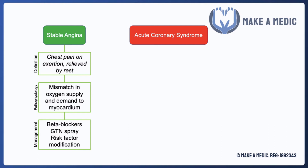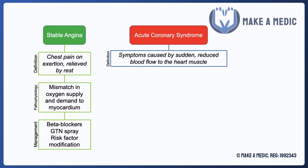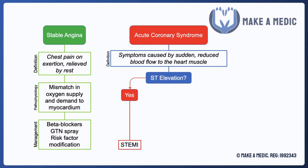Acute Coronary Syndrome is defined as the symptoms that occur due to sudden reduced blood flow to the heart muscle. There are three different subsets that constitute Acute Coronary Syndrome, differentiated based on their ECG findings and a blood test result. The first thing you do in a patient presenting with chest pain is an ECG, and the main thing you're looking for is ST elevation. If there is ST elevation, it is an ST elevation myocardial infarction.